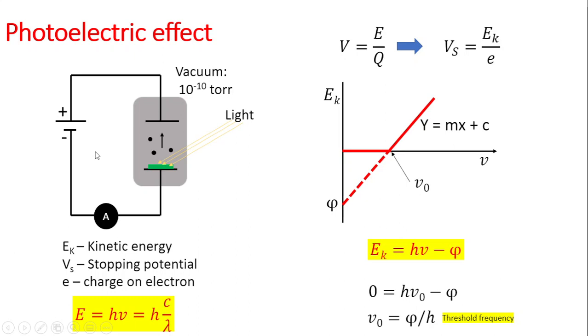One important aspect that was extrapolated to XPS is understanding the energy of these electrons. When electrons come out of the metal, they have kinetic energy. Determining this kinetic energy is crucial for XPS, as it can be used for elemental analysis and other analyses.